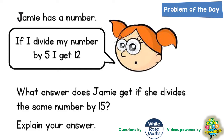Welcome, problem-solving fans, to another problem of the day — this one's all about Jamie's mystery number. Jamie has a mystery number and she says that if she divides her mystery number by 5, she gets 12. So let's represent that mystery number with a question mark.